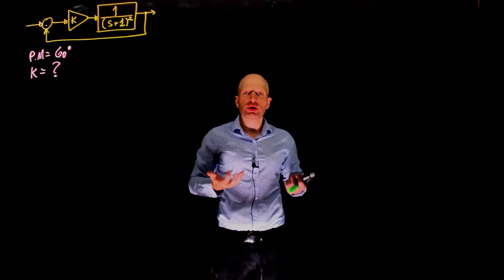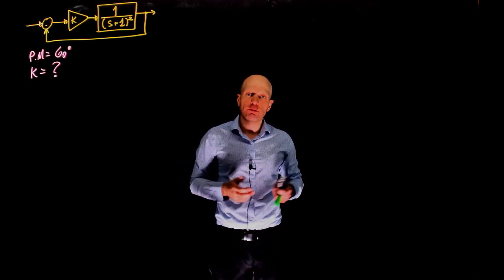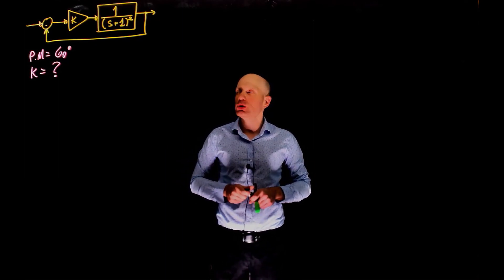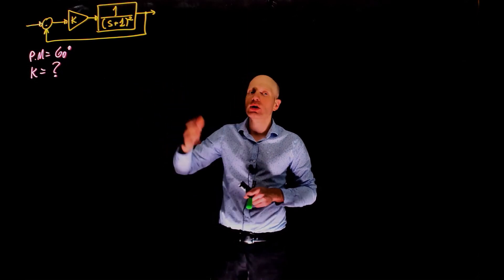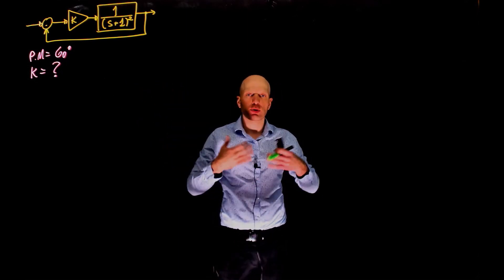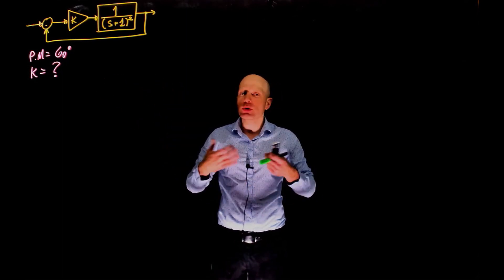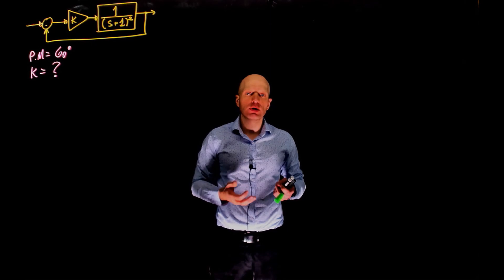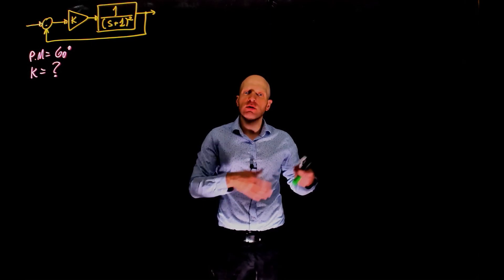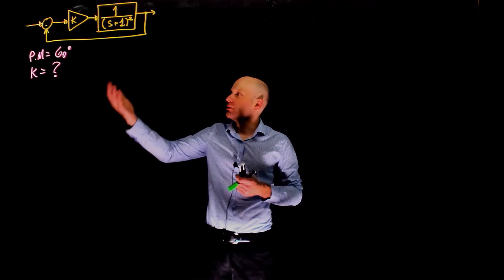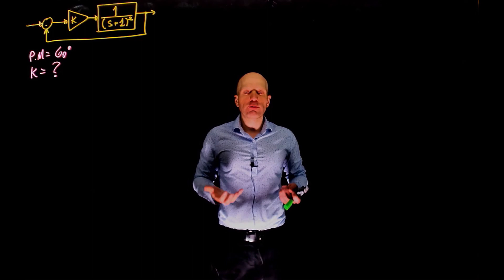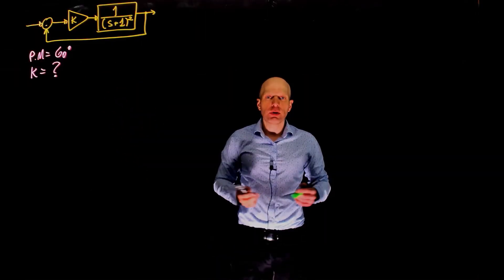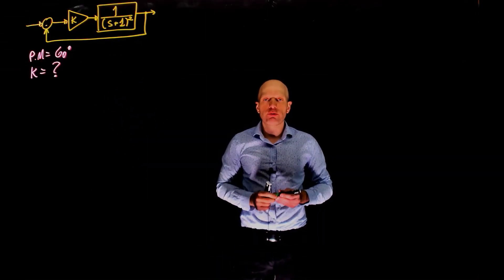Obviously, we need to start by looking at the phase margin. To find the phase margin, we need to look at the loop transfer function, find its crossover frequency, and with the crossover frequency we can evaluate the phase margin. We then set the phase margin to 60 degrees. Clearly the phase margin will be a function of k, so let's start by finding the crossover frequency.